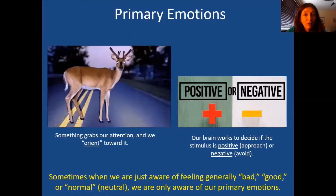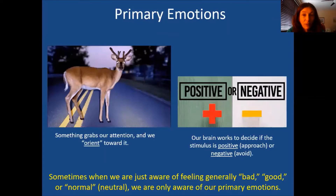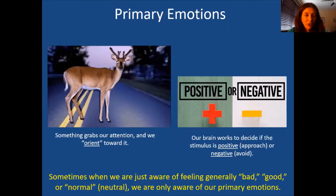There are things called primary emotions and categorical emotions. Primary emotions start from what they call an orienting response — like a deer looking at an oncoming car. If you heard a really loud noise, chances are you'd look toward it as a reflex — trying to figure out what it is, whether it's a danger, whether you should run away or approach. Your brain is constantly comparing stimuli to past experiences to quickly figure out what to do, deciding if something is positive, negative, or neutral — even before you're conscious of it.